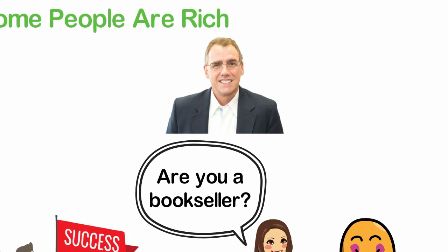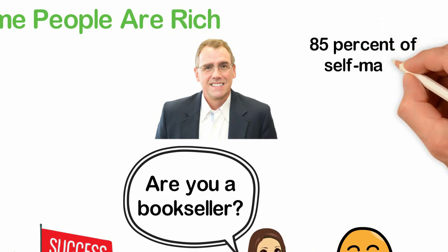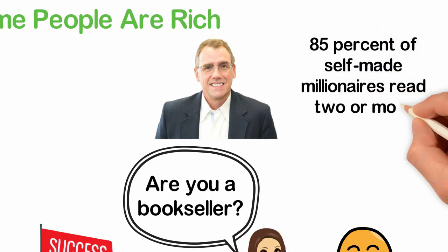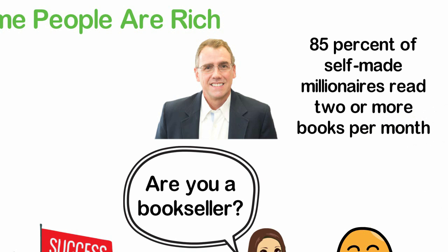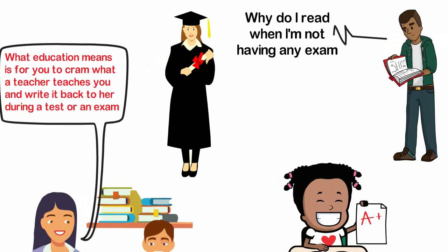According to research from Thomas Crowley, 85% of self-made millionaires read two or more books per month. Most people in the world don't read anything after they get out of school. And this is because the school has made them believe that education is the degree they carry.